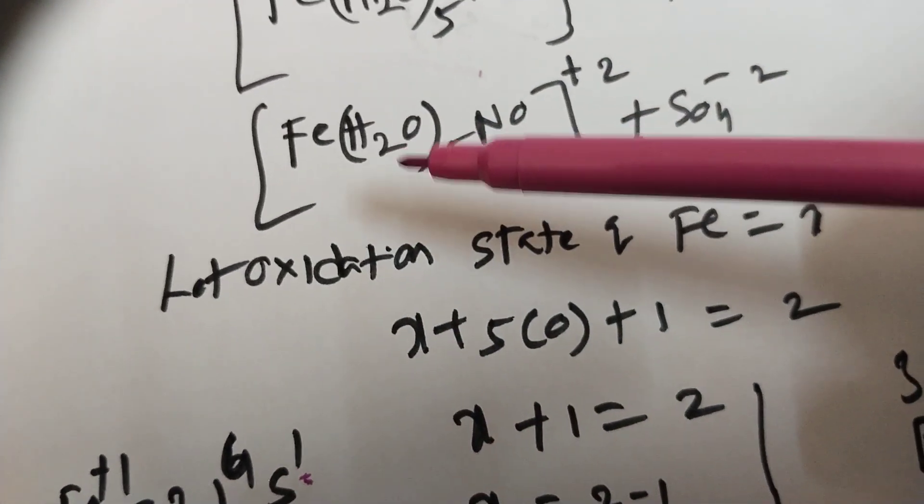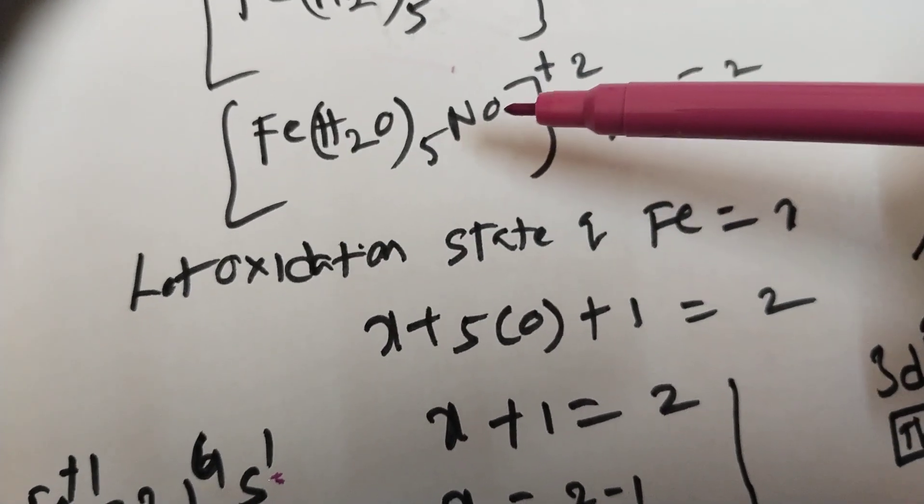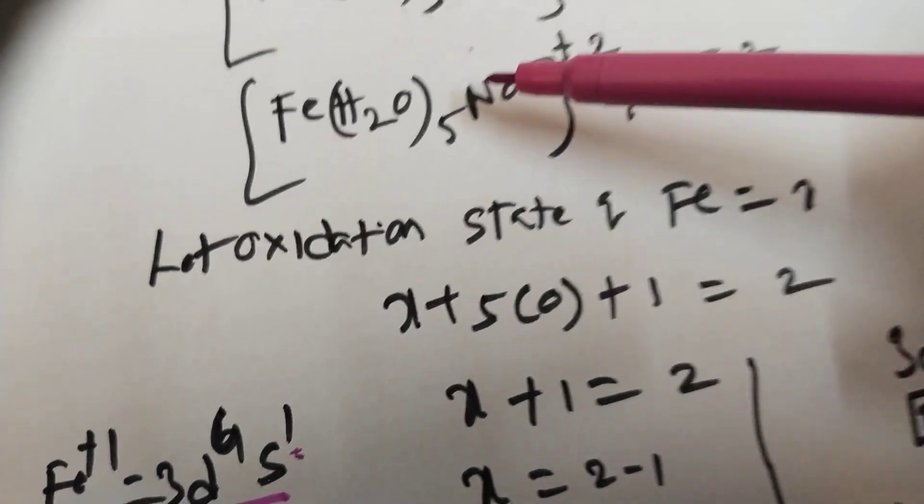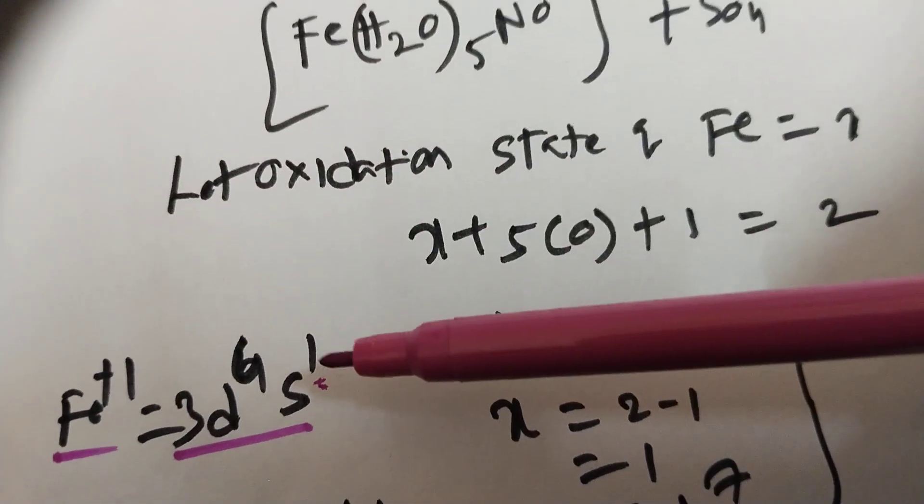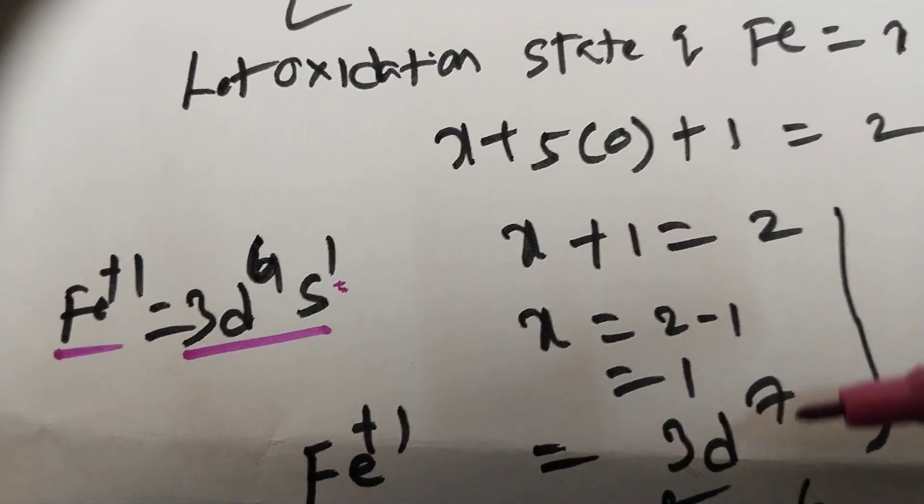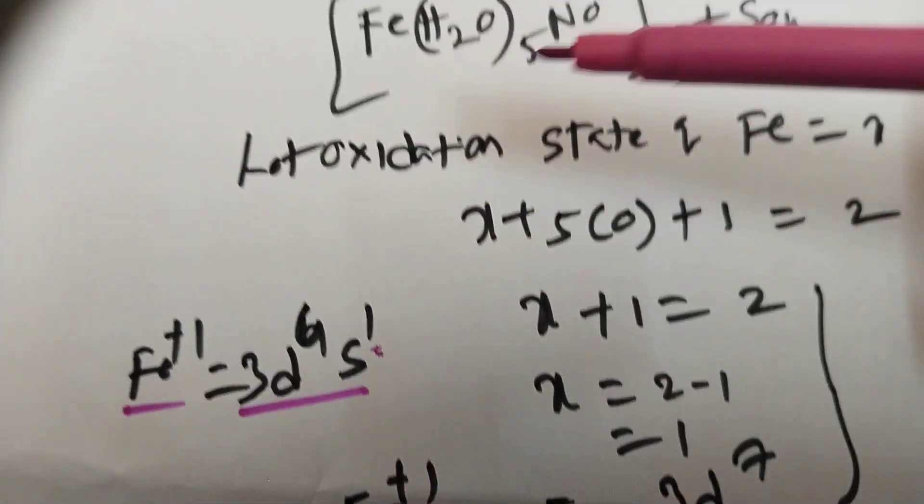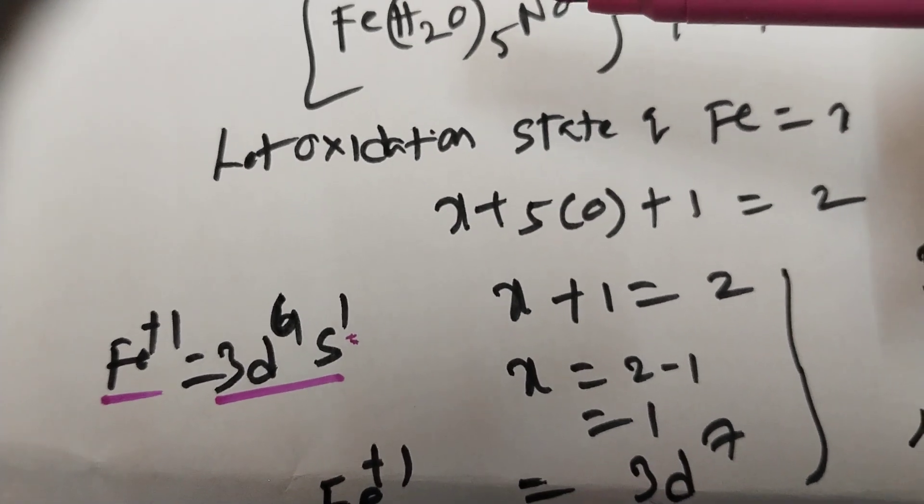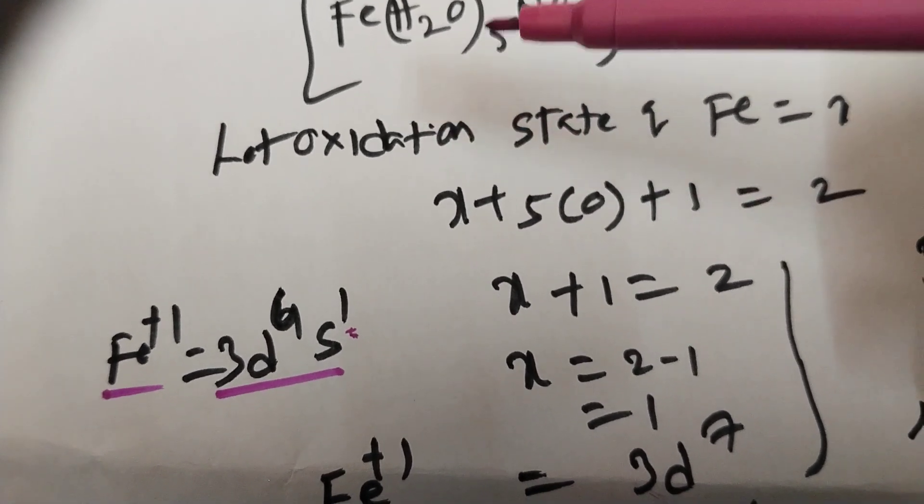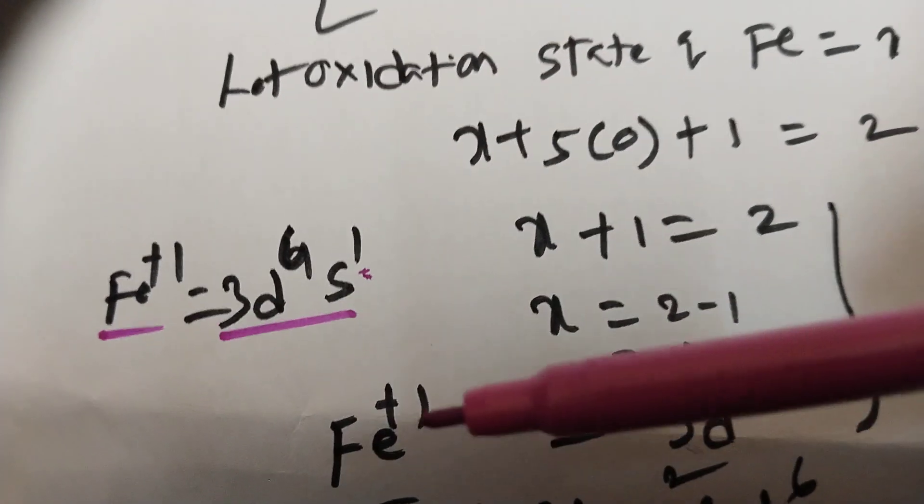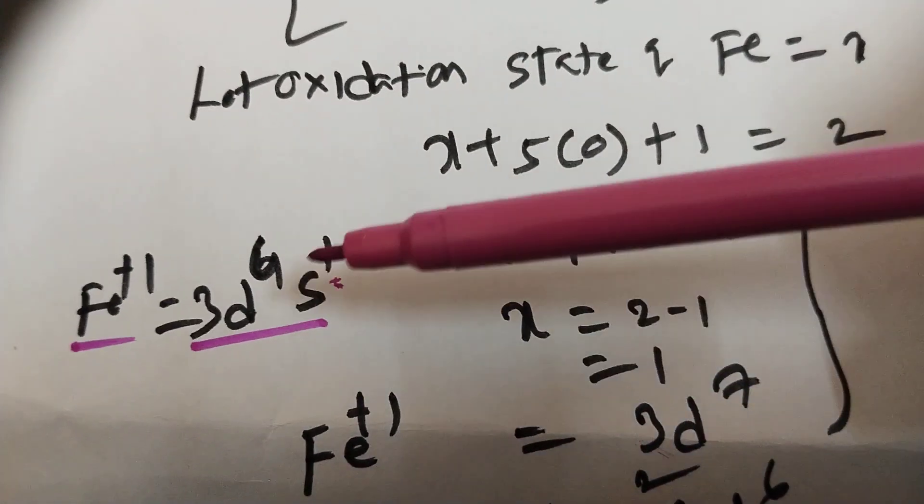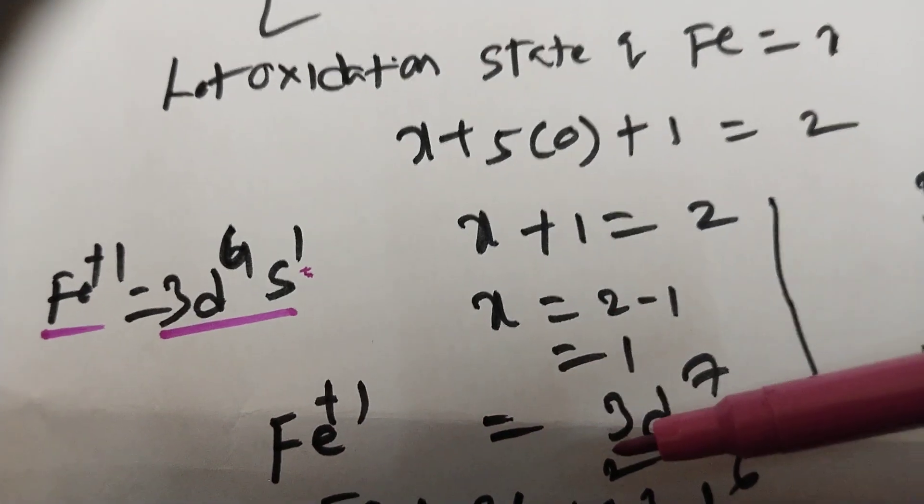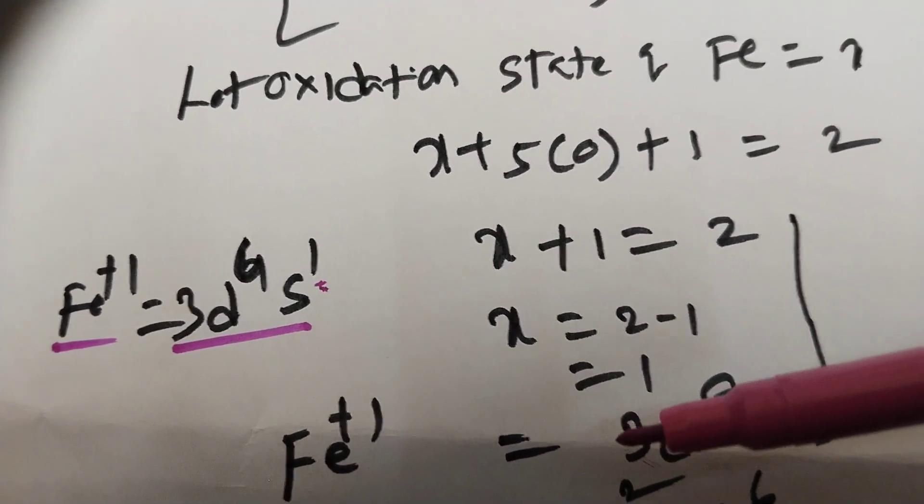But here we have a weak field ligand and a strong field ligand. Weak field ligand and strong field ligand attack the configuration. The configuration may be converted to Fe plus 1 3d7. This is a weak field ligand, H2O weak field ligand. This is a strong field ligand. Because of the attacking of strong field ligand, the electron enters into d-orbital. So d-electron configuration becomes 3d7.